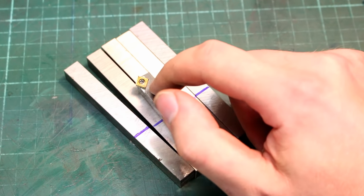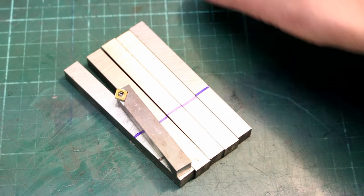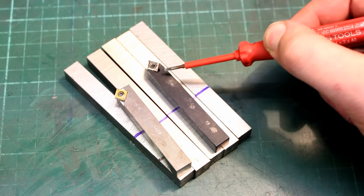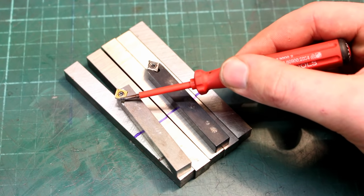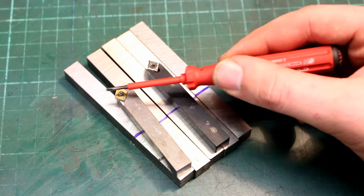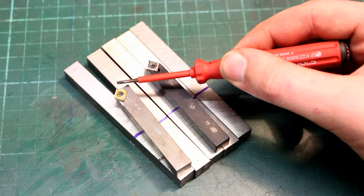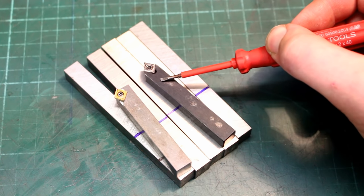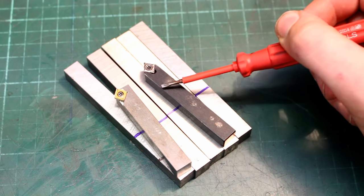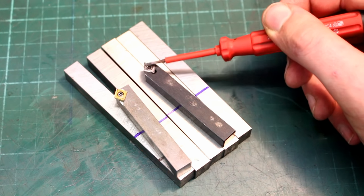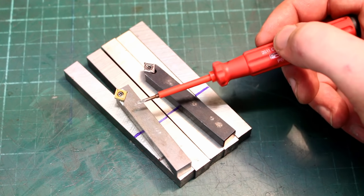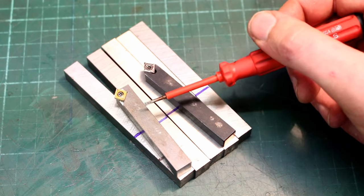So you can use this to do a proper chamfer. And you can't buy a tool like this. They don't sell these. And another benefit over this one, you can use it for facing and for turning. And for chamfering. So, three uses. Two uses. Or maybe one and a half uses. Because you can't really do a proper 45 degree chamfering with it. I think this is more useful.